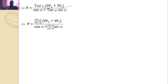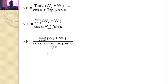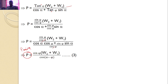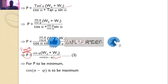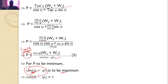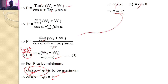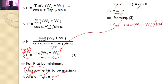Further simplifying by writing tan(phi) = sin(phi)/cos(phi), after cancellation we get: P = sin(phi)*(W1 + W2) / cos(alpha - phi). Our interest is to find the minimum value of P. For P to be minimum, cos(alpha - phi) must be maximum. The maximum value of cosine is 1, which occurs when the argument is 0, so alpha = phi = 5°. Substituting alpha = 5° gives: P_minimum = sin(phi)*(W1 + W2), which is the answer for the given problem.